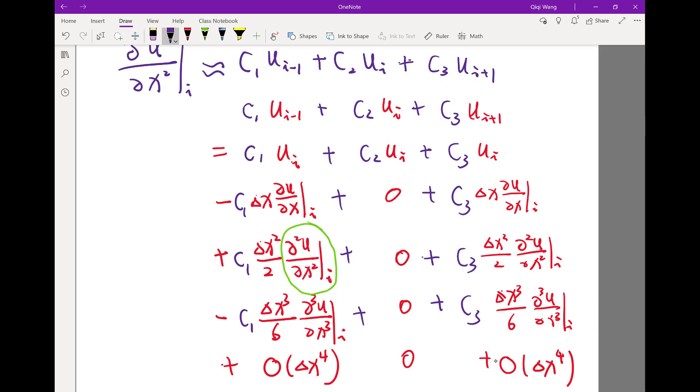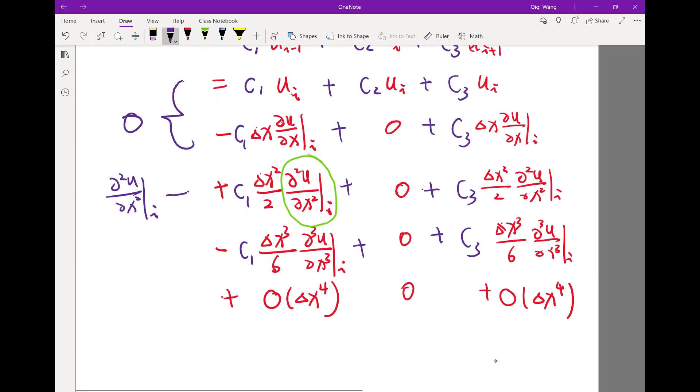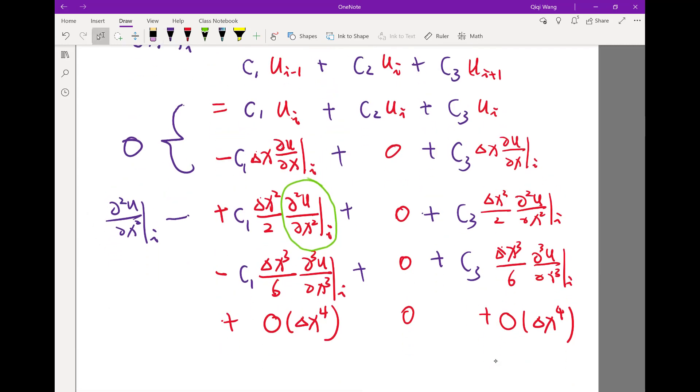Now I really have three unknowns. I need to basically have this to be zero and this turns out to be just the second derivative at i. So I have three equations and three unknowns. You can solve these equations by manipulating them, but for me it's actually easier if I just turn it into a matrix form.